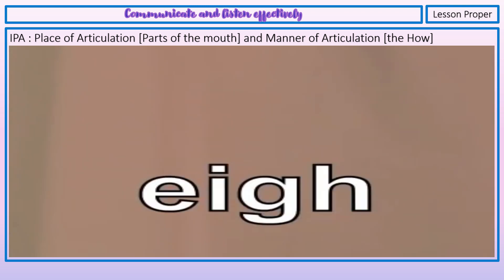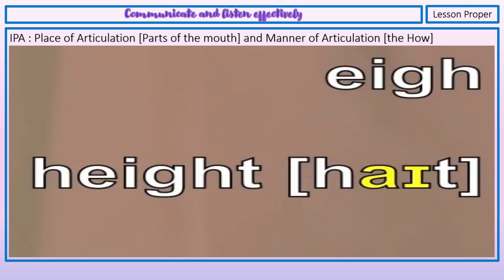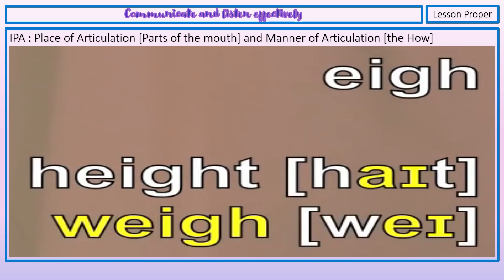Take a look at these letters. They're not always pronounced the same. Take for example the word height, right — here they are the 'I as in by' diphthong. But in the word way, they make the 'eh as in say' diphthong sound. This is why the International Phonetic Alphabet makes it easier to study pronunciation. This particular video focuses on diphthongs.